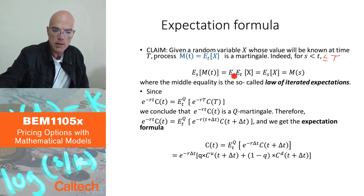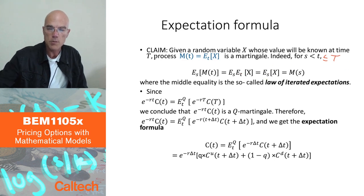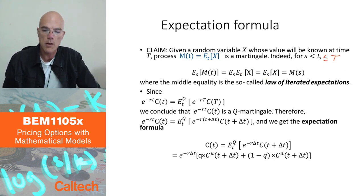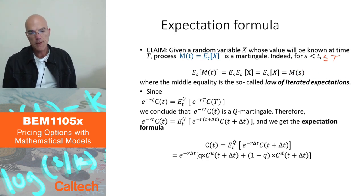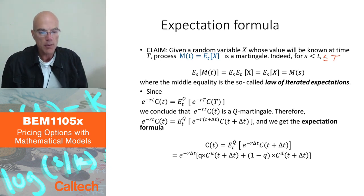So expectation with s, expectation t, when s is less than t, the only thing that survives is expectation with respect to less information, which is expectation at time s. So because of that, expectation at s of expectation at t of x is expectation at s of x, and by definition, this is m of s. So we prove that expectation of the future given today's information is just today's value of this process, and therefore that process is a martingale. So this is useful to know, and I'm going to apply it here.